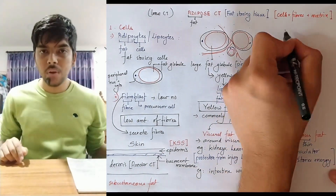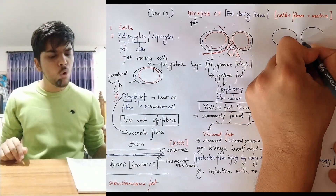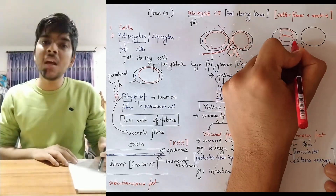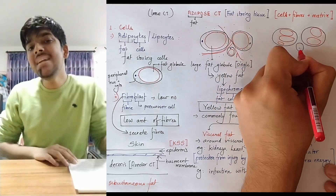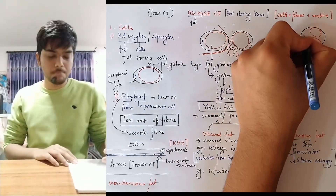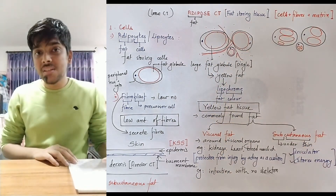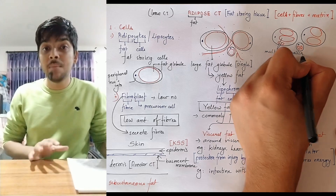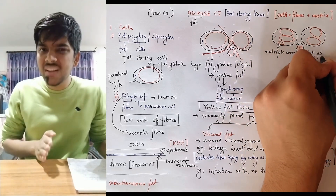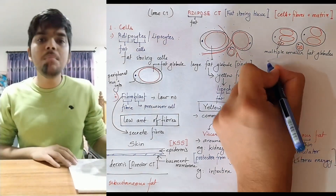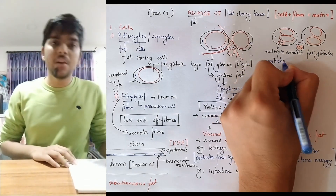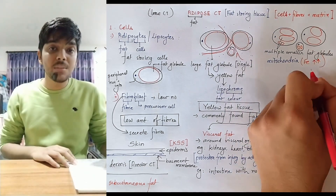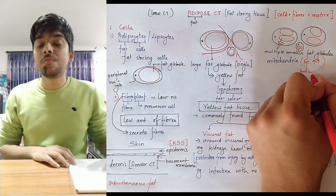Now for the second type of fat tissue. It consists of large spherical or oval cells, but instead of having a single large fat globule, these cells contain multiple smaller fat globules. What's more different about these cells is that they contain mitochondria — but not just any mitochondria. They contain mitochondria that is very rich in iron cytochrome pigments. Since it is rich in iron cytochrome pigments, this fat imparts brown color.